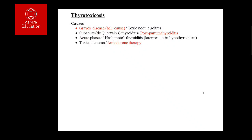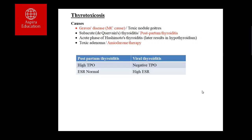Amiodarone, a popular class 3 anti-arrhythmic drug used for atrial fibrillation and ventricular fibrillation, has significant effects on thyroid hormone and can cause thyrotoxicosis. This is an important drug to remember, as questions on it have appeared in the MRCP exam.